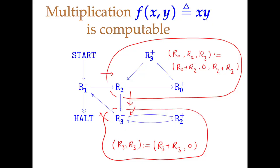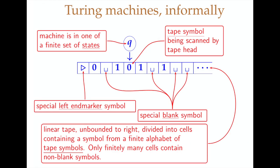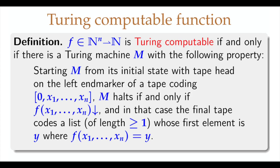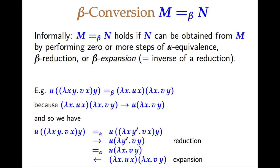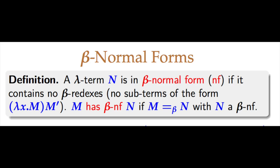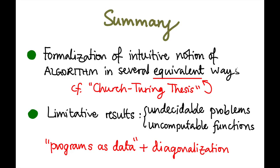We discussed things like undecidable problems, register machines, universal register machine, Turing machines — that was a lot of machines — Church-Turing thesis, lambda calculus, and primitive and partial recursion.